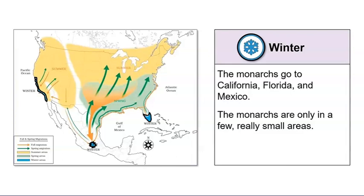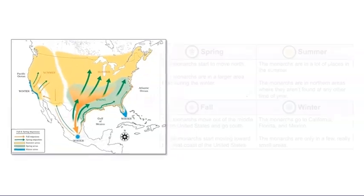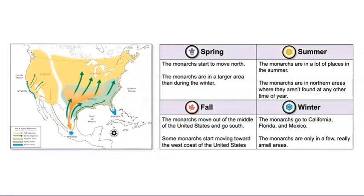Let's put all our observations in one place. It seems from our map that butterflies move a lot over the course of a year. I wonder why they do that. Let's learn more about this movement from our book, A Butterfly is Patient.